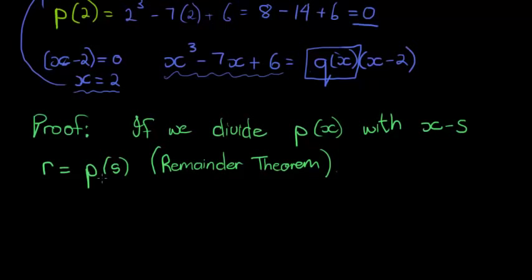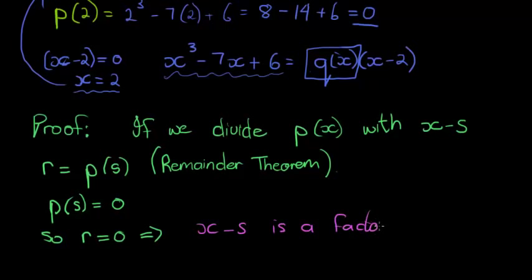Okay, now with that in mind, we also know that p(s) is equal to 0. So, my remainder is equal to 0. And because my remainder is equal to 0, I can conclude x minus s is a factor. Easy as that.